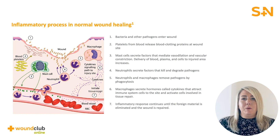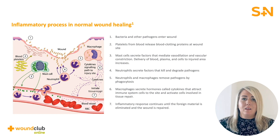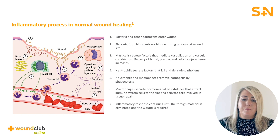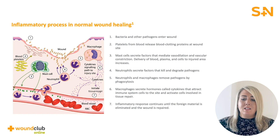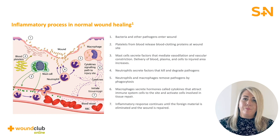This image takes you through each stage of the inflammatory process. It is here where wounds get stuck due to abnormal wound healing. Firstly, bacteria and other pathogens enter the wound. Platelets then release blood clotting proteins to stem any bleeding. Mast cells secrete factors which control vasodilation and vasoconstriction and as a result blood plasma and other cells increase. Neutrophils arrive at the scene of the injury and secrete factors that kill and degrade pathogens.